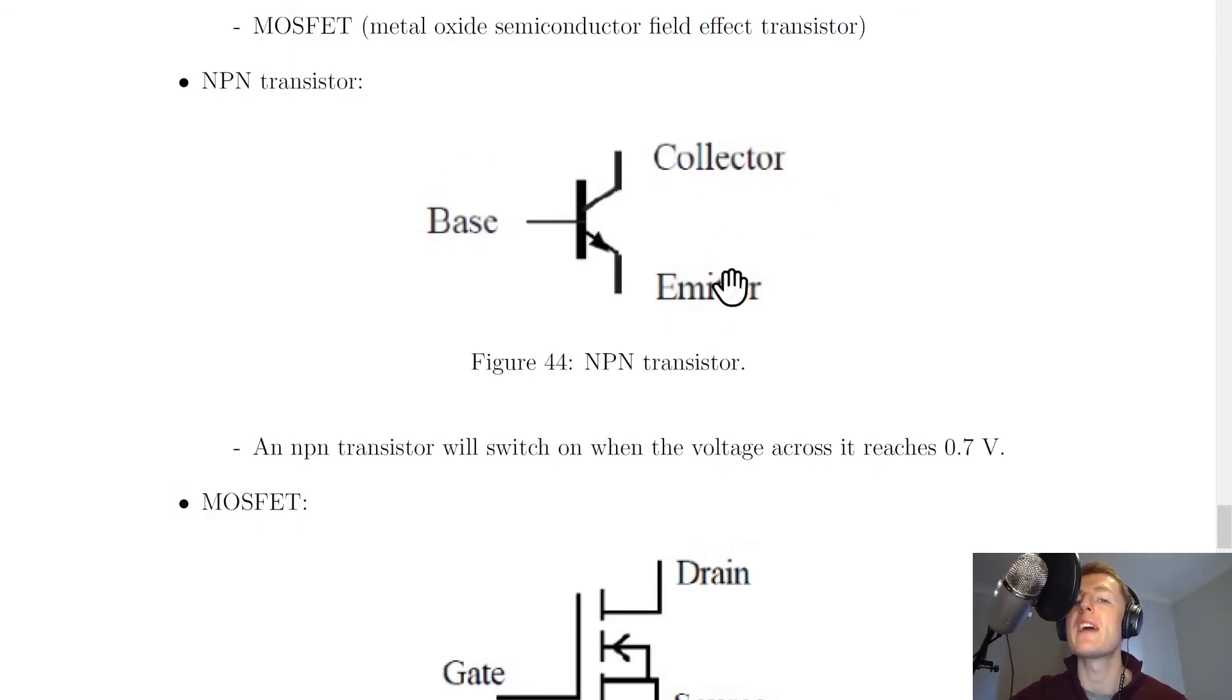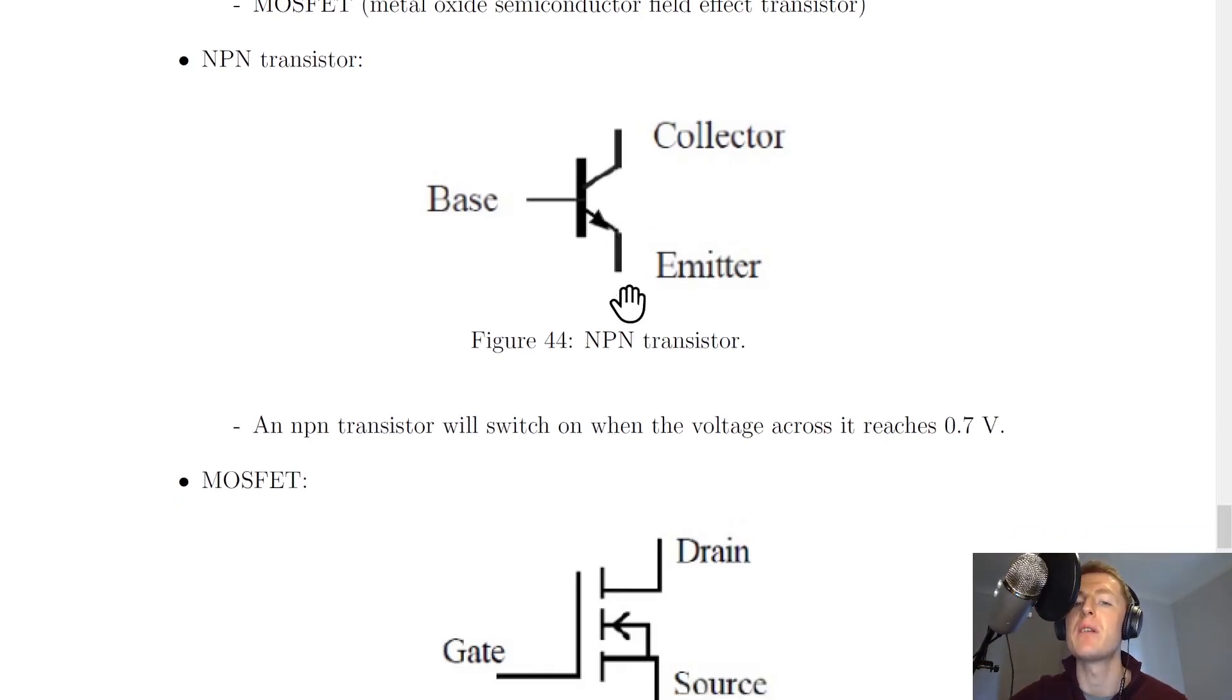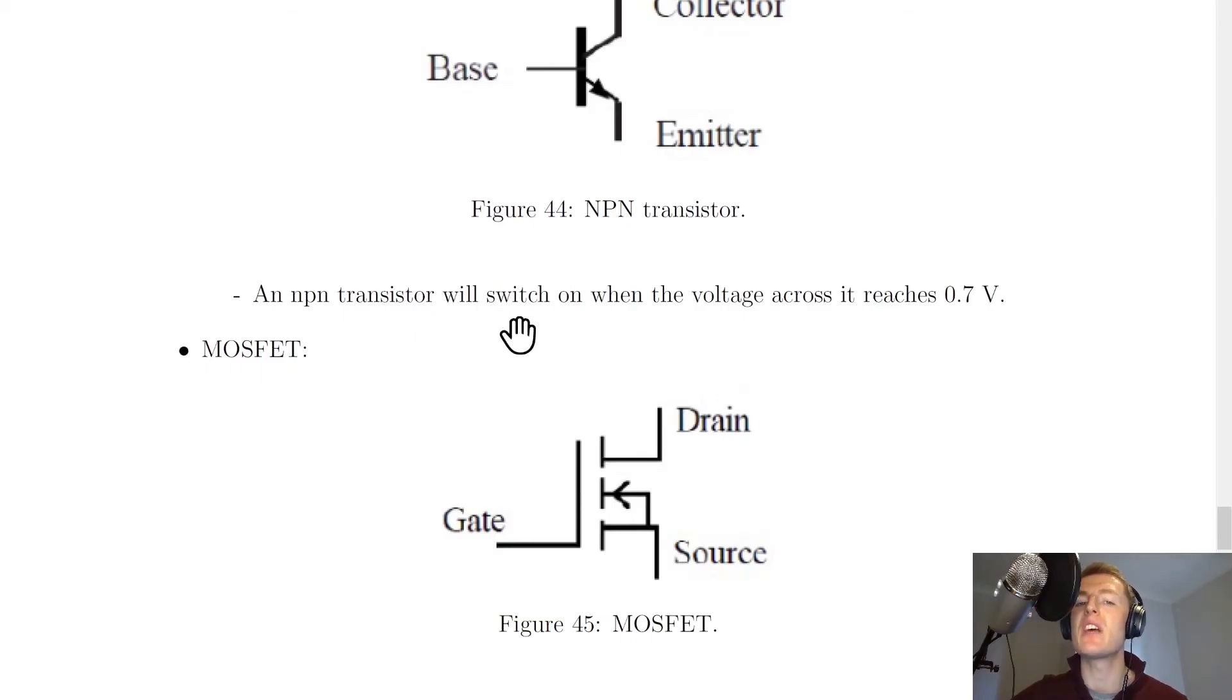You'll notice we've got this thick line here with some more lines and an arrow pointing away from the transistor. An NPN transistor will switch on when the voltage across it reaches 0.7 volts—that's what we call its switch-on voltage.